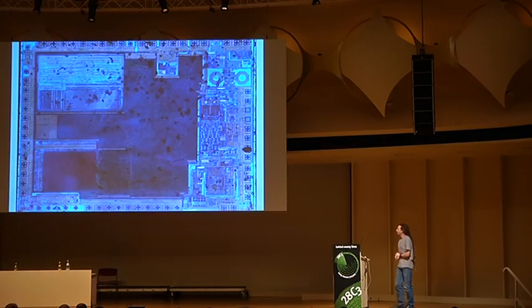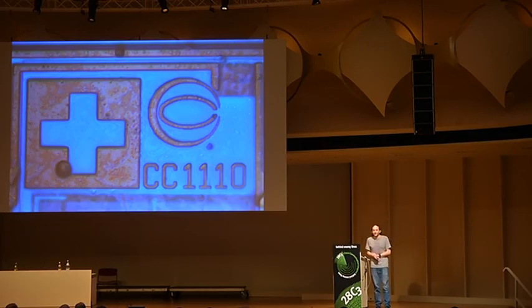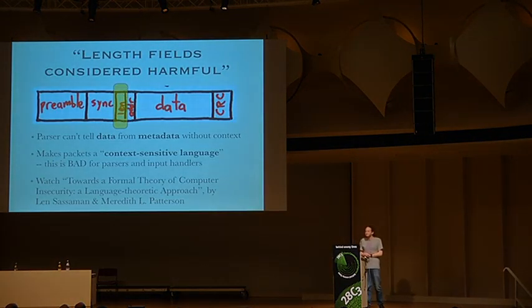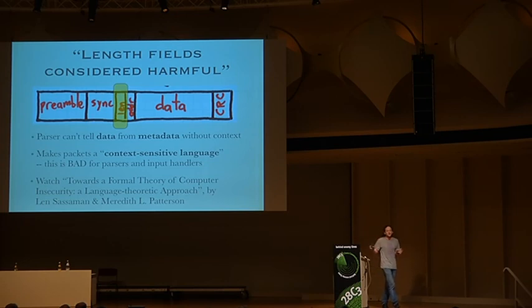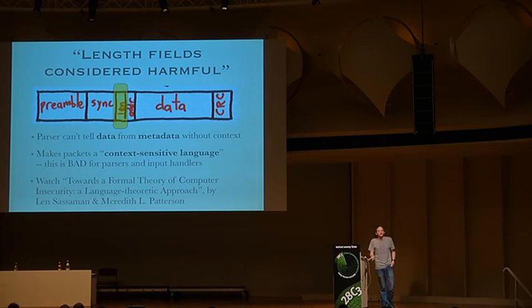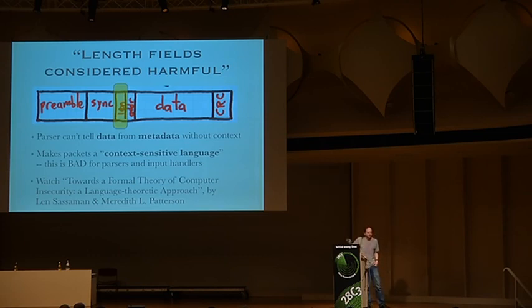These vulnerabilities need to be figured out and patched before the product or standards ship. Length fields are terrible because they can't tell the difference between data and metadata — they make a context-sensitive language. This is both bad for parsers and input handlers, and really bad for hardware because it can't be fixed. Len Sassaman and Meredith Patterson made a video called 'Towards a Formal Theory of Computer Insecurity: A Language Theoretic Approach' that explains this at the theoretical level and works on the practical level.